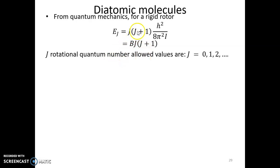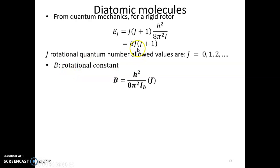The quantum number j is the rotational quantum number characterizing each energy level. B is the rotational constant, and by comparing the two equations, B = h²/(8π²·Ib), where Ib is the moment of inertia along the b-axis.